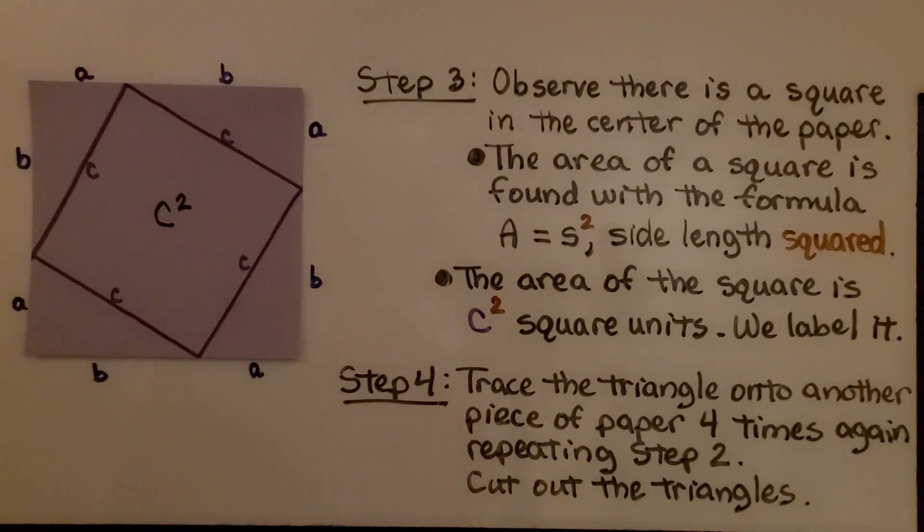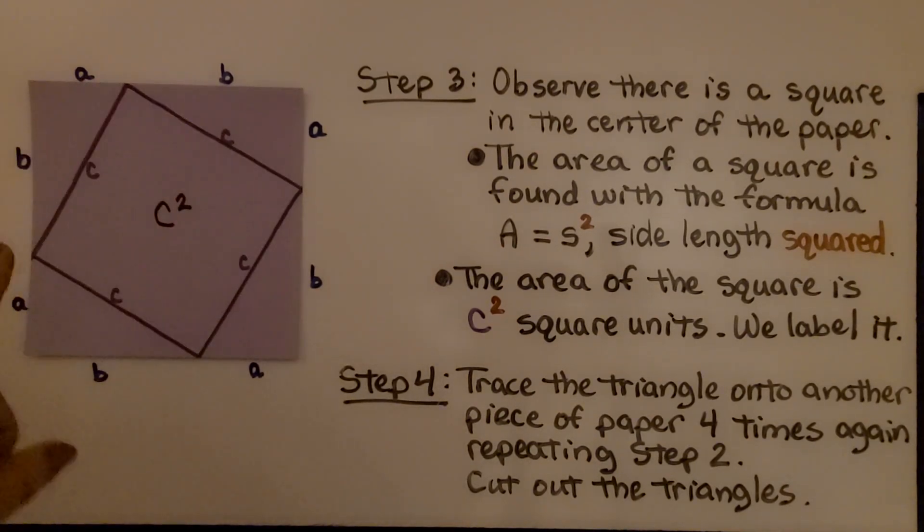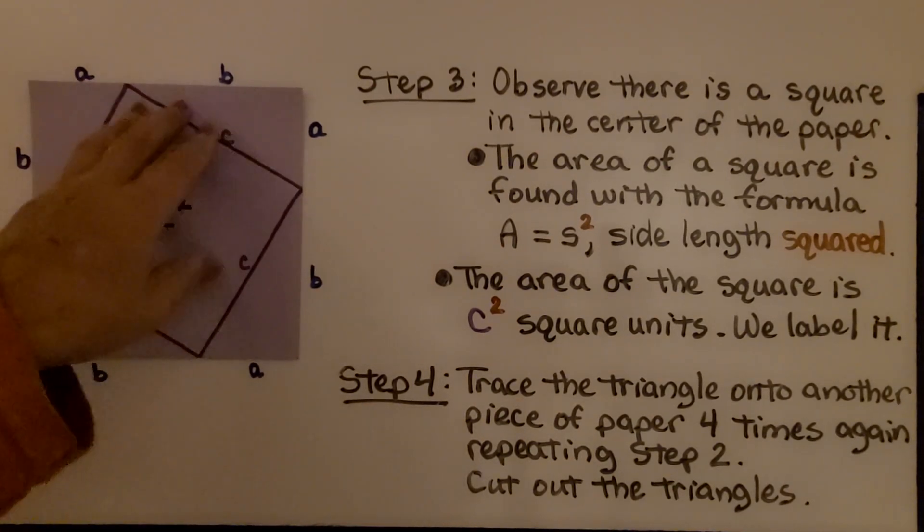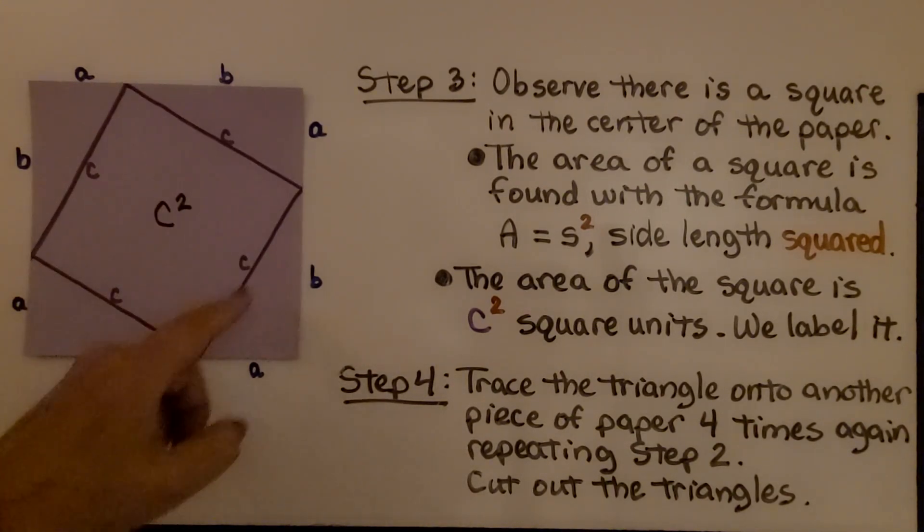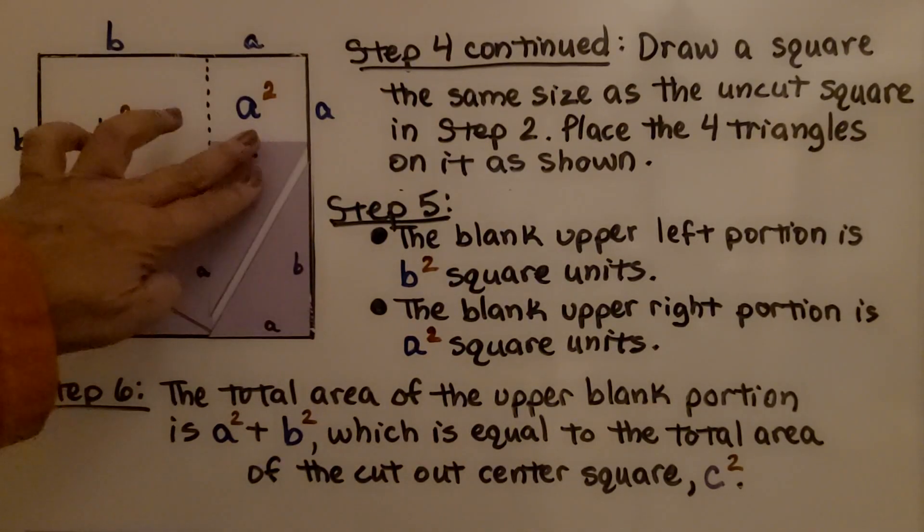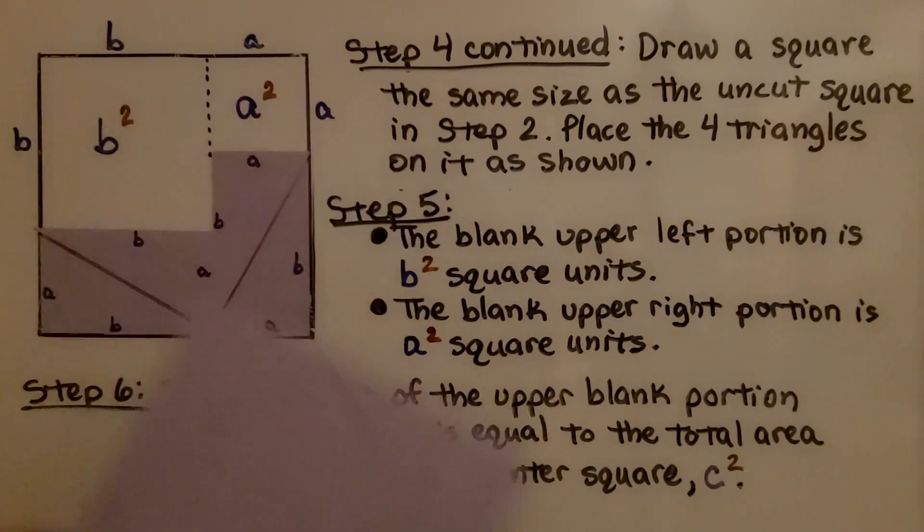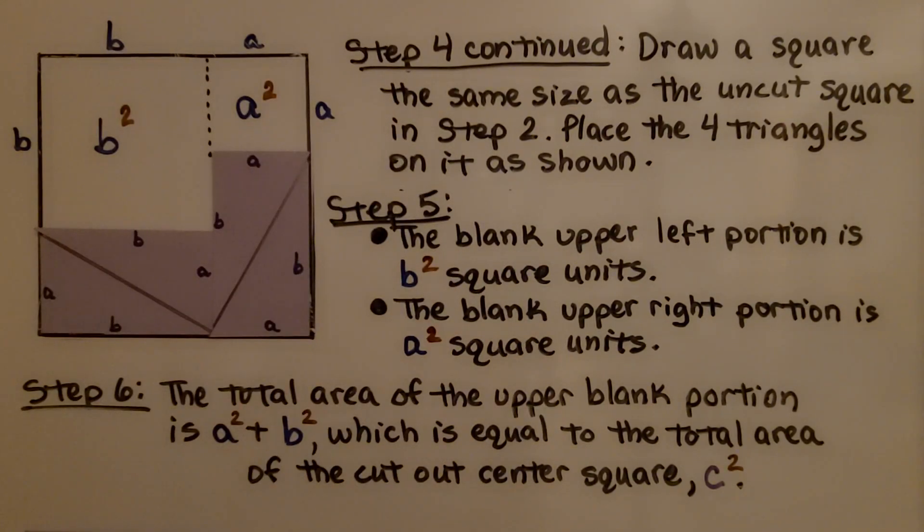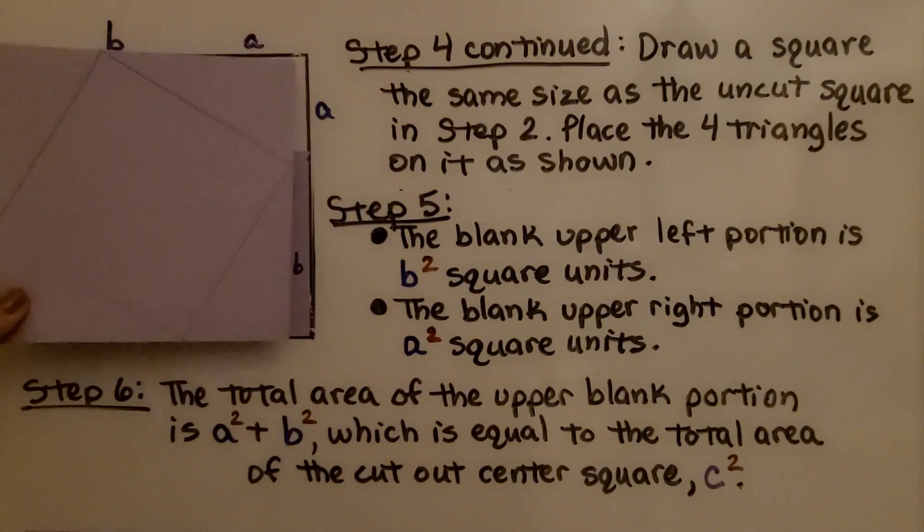The fourth step is we trace the triangle onto another piece of paper four times again, repeating step two. So we have another one of these, except this time, when we make the other one of these with the four triangles in the square in the center, we're going to cut the triangles out. So we've made four cut out triangles, and we have our original one, and we draw a square that's the same size as the uncut original one from step two.